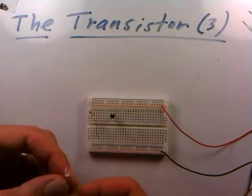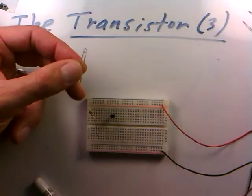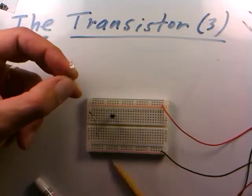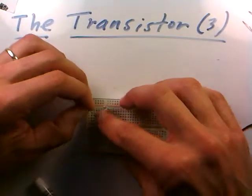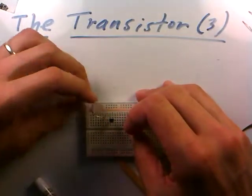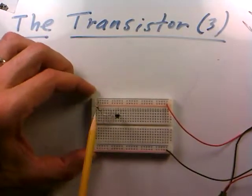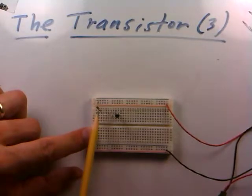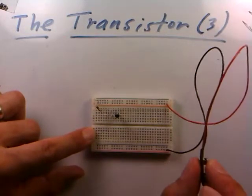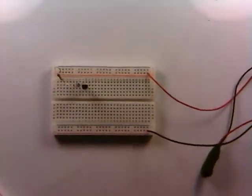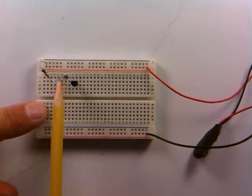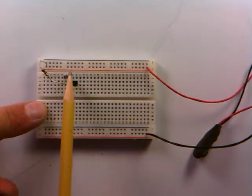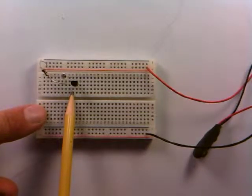We'll take a 100 ohm resistor — brown, black, brown — connected directly to 9 volts. The output of the resistor feeds the LED on the non-flat side. As the current goes through the LED and comes out the flat side, it feeds right into the collector lead of the transistor. So the path is: 9V → 100Ω → LED → collector.